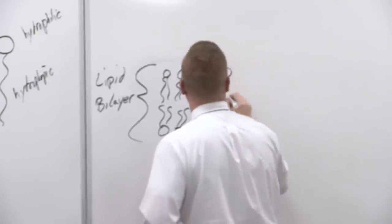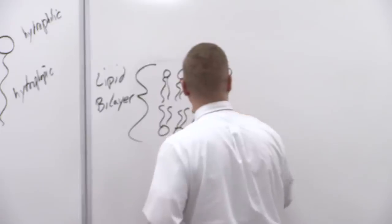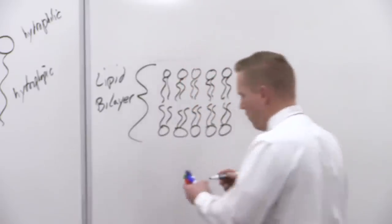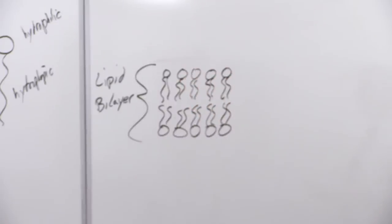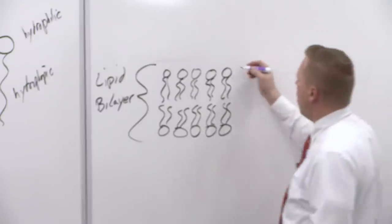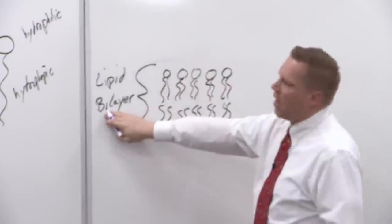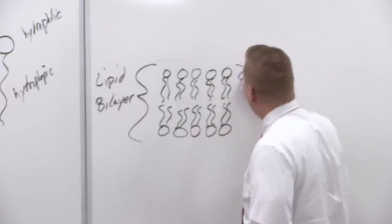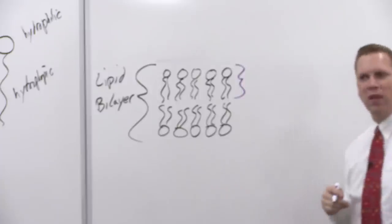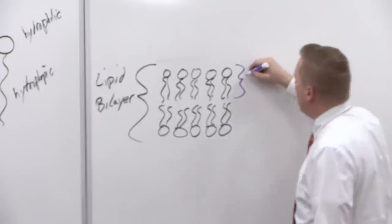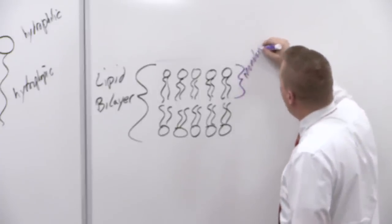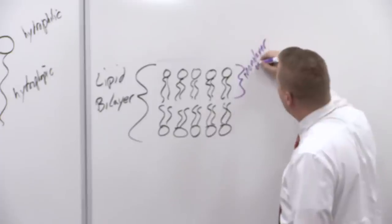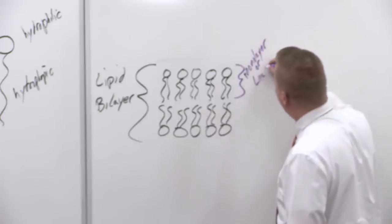A couple of terminology points: together the structure is a bilayer — bi meaning two, so there are two layers. Sometimes we want to talk about just one layer, which is called a monolayer, and it might also be called a leaflet.